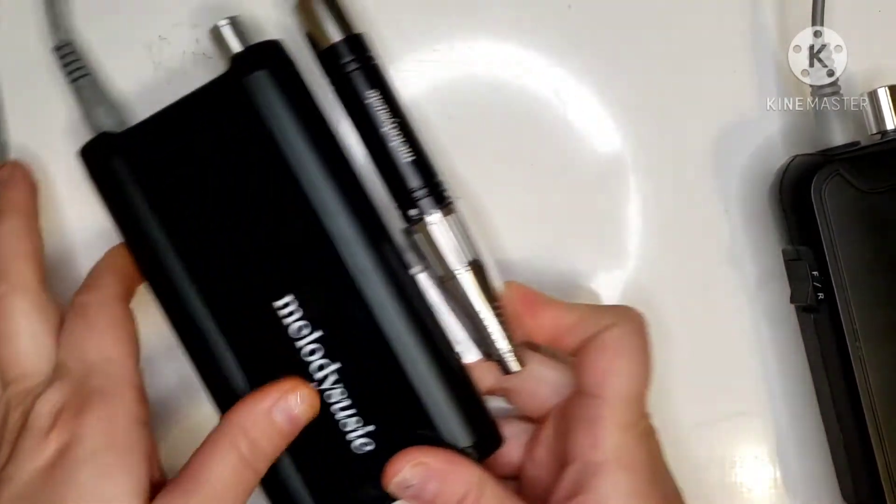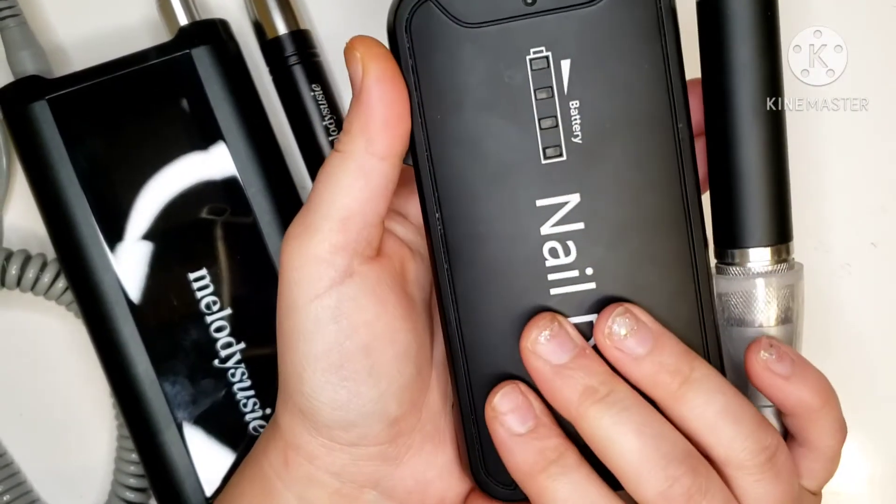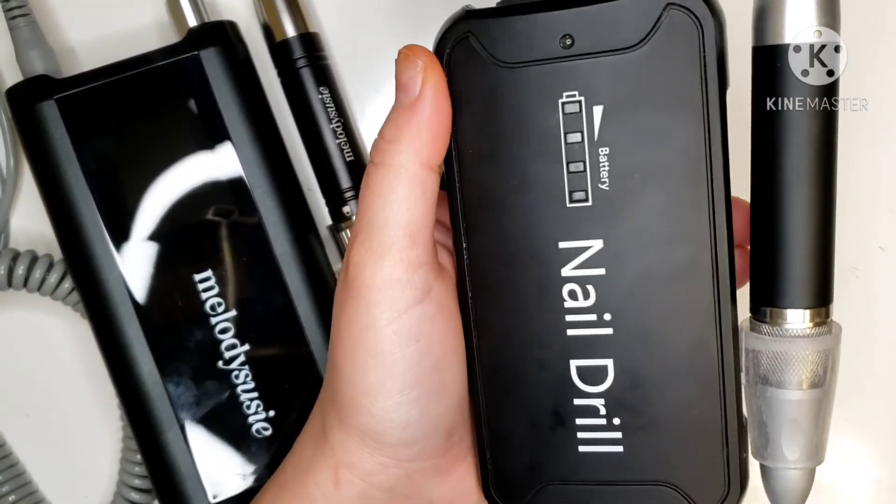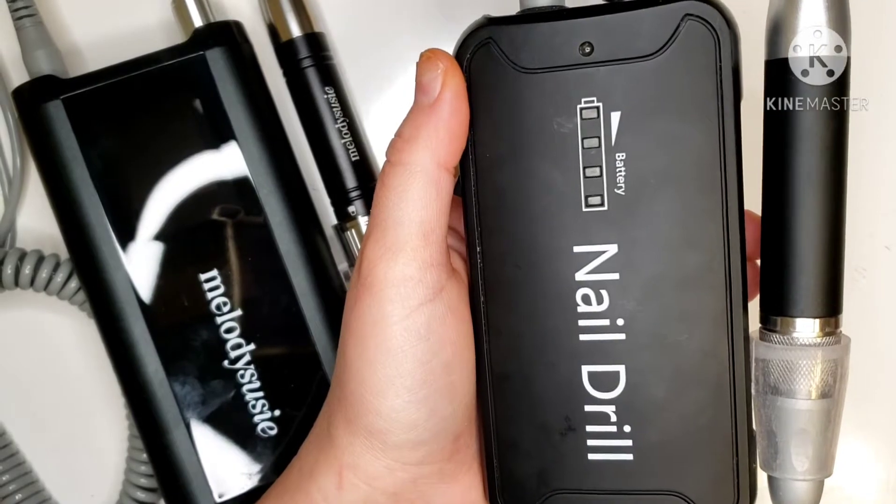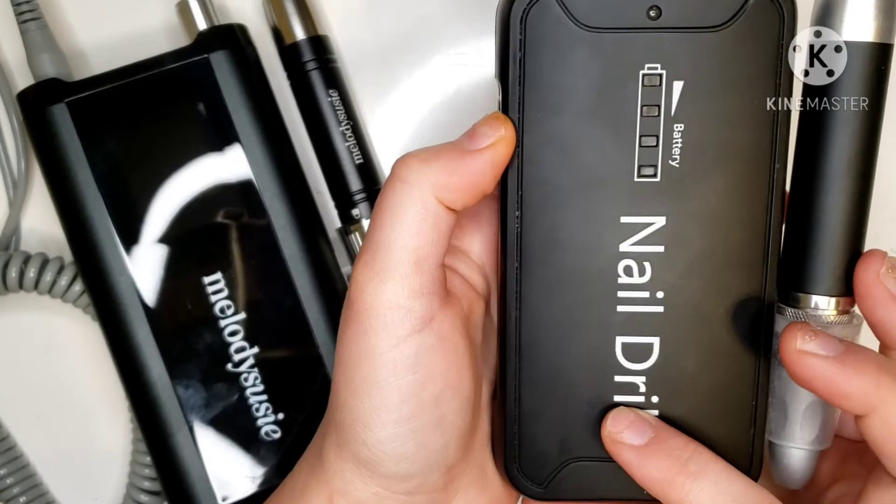Now before this one came out, I did have this one, which is also called the Sparkle e-file or rechargeable nail drill as they call it on their website. It goes up to 35,000 RPMs.